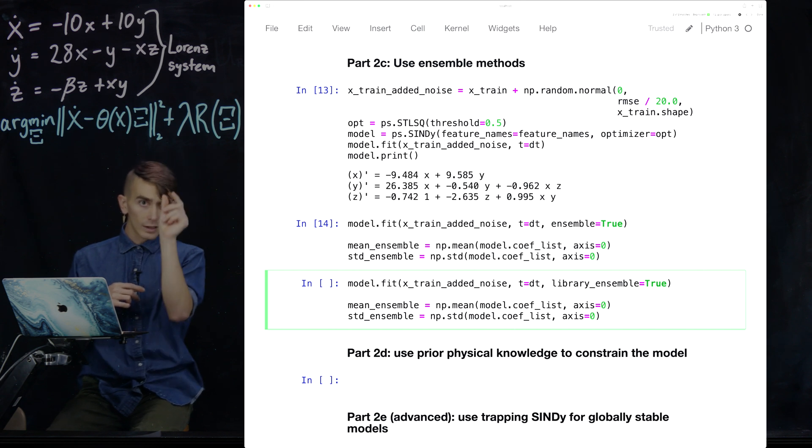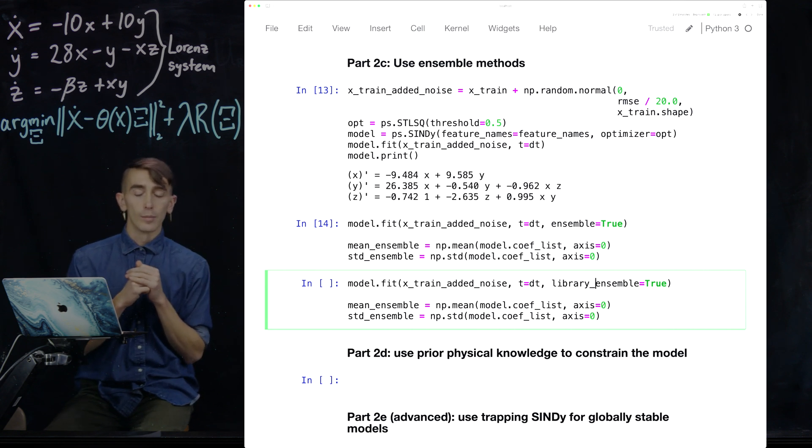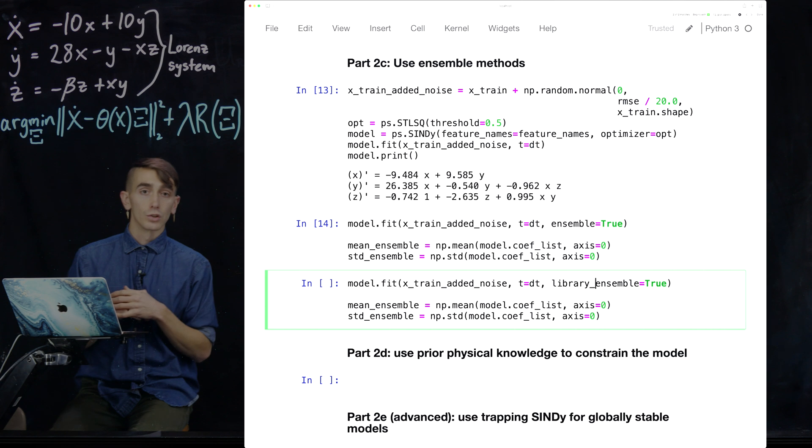But instead of subsampling your data in time to get different models to generate, it's actually going to subsample your candidate feature library. So it's going to eliminate, for instance, one of those terms in your library and just fit the model on that smaller library. And it'll do this 20 times for different combinations of that library. And again, you can kind of see which coefficients show up very often despite this subsampling. And again, this gives you some statistics about which coefficients are showing up in your models.